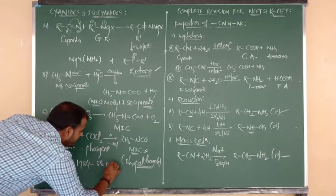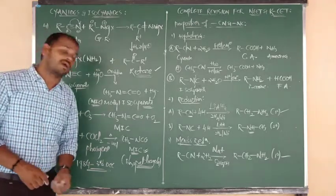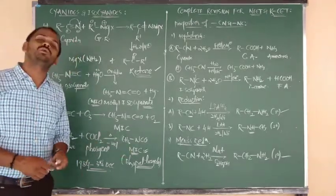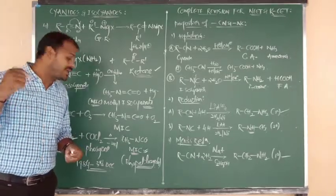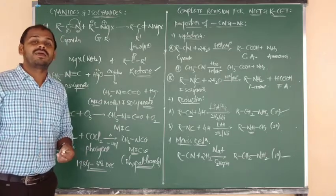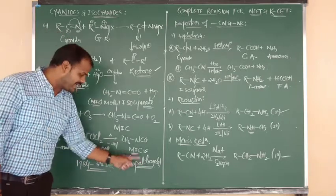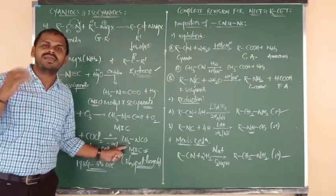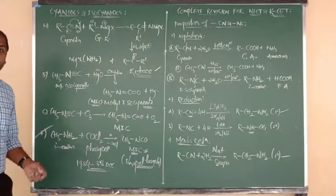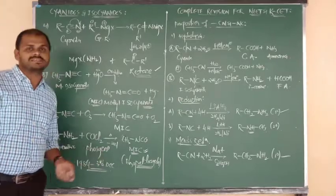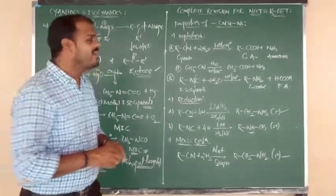The Bhopal tragedy occurred on 3rd December 1984 due to the release of MIC (methyl isocyanate). So many people died and are still suffering due to that incident. Bhopal tragedy gas is MIC, produced by the reaction of primary amine (methylamine) with phosgene.